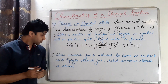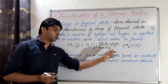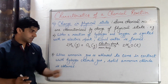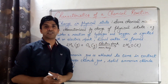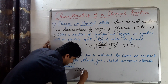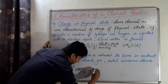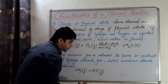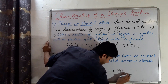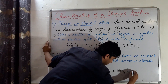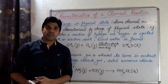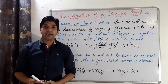Another example: when ammonia gas comes in contact with hydrogen chloride gas, solid ammonium chloride is obtained. NH₃ (gas) + HCl (gas) → NH₄Cl (solid). The reactants are in gaseous form and the product is in solid state — this is change in physical state from gaseous to solid in a chemical reaction.